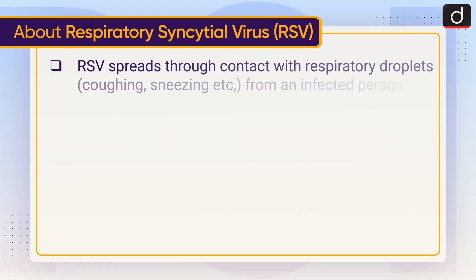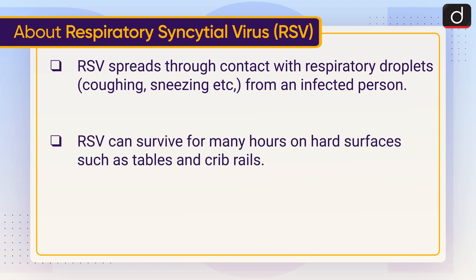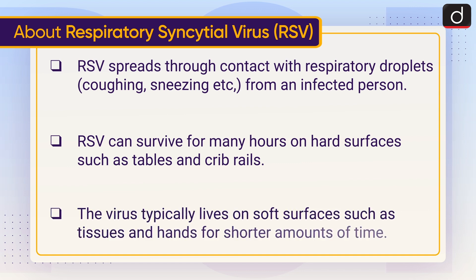RSV spreads through contact with respiratory droplets — coughing, sneezing, etc. — from an infected person. RSV can survive for many hours on hard surfaces such as tables and crib rails. The virus typically lives on soft surfaces such as tissues and hands for shorter amounts of time.